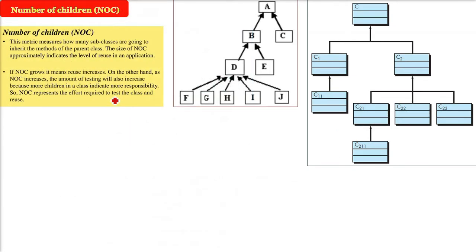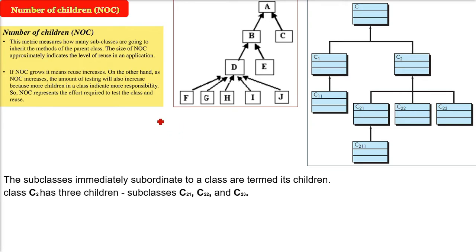Next thing comes is number of children. Number of children is the subclasses immediately subordinate to a class. These are termed its children and this is the number of children. For example, here you have this is a C2 class. Now it has subordinate immediate subordinate classes as C21, C22 and C23. So how many number of children it has? Three.